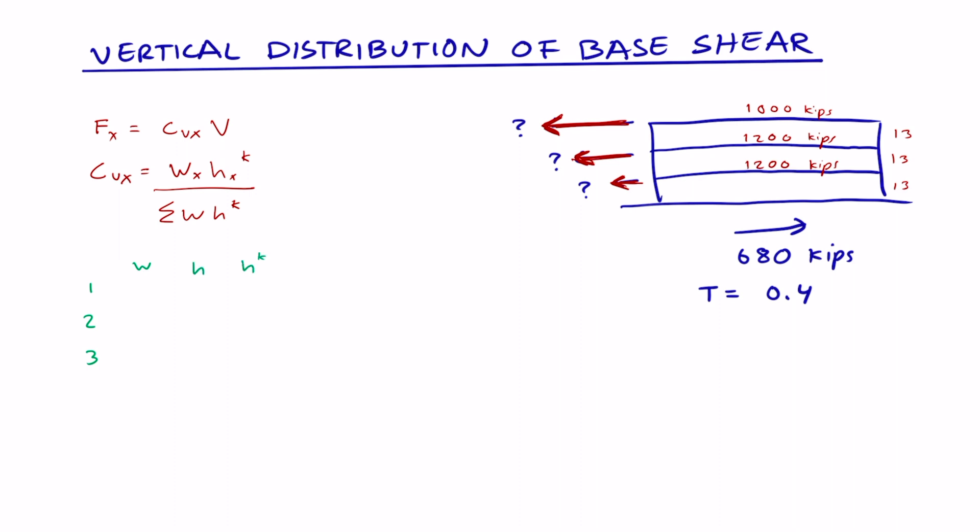For the columns, we have the weight of each level, the height of each level from the ground, height raised to the power of k (which I'll show you how to find shortly), weight times height raised to the power of k, CVX, and Fx. Fx is the seismic lateral force at each level.